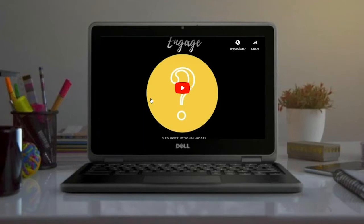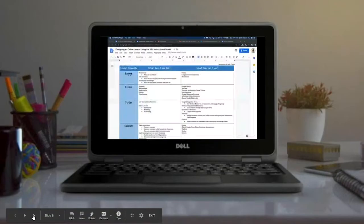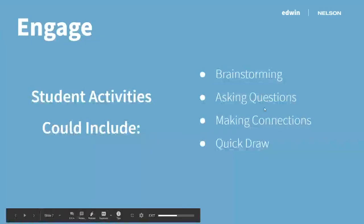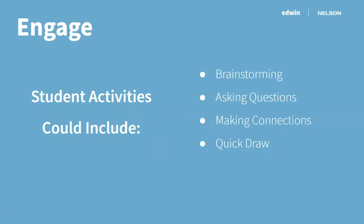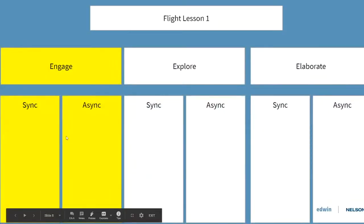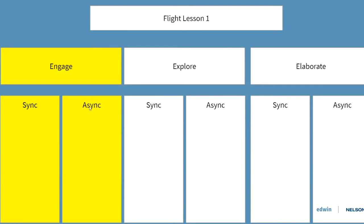There are lots of ways to use that engage piece of your lesson. Let's look at some ways Edwin and other tools can support it. At the beginning of a lesson you can do brainstorming, asking questions, making connections, or having students draw a picture quickly. If you're using a tool like Google Draw, Jamboard, or Pear Deck, you can have students draw something — what does a volcano look like, what's underneath it. In a digital space, virtual whiteboard tools make it fun instead of just typing everything, making it more creative and engaging.